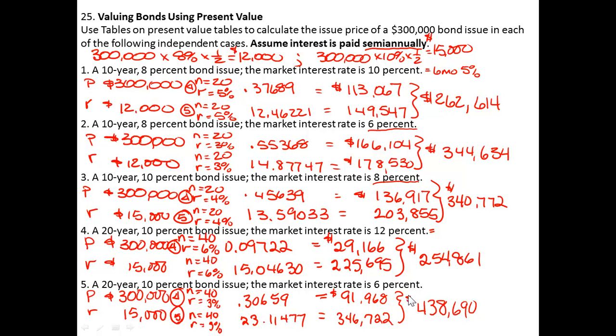So hopefully this has given you enough examples of how to use those tables to find the present value of both the principal or the face amount of the bond plus the series of interest payments for interest.